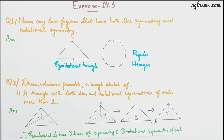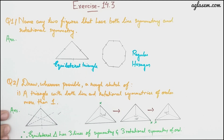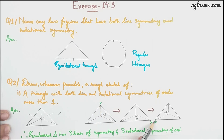The next question asks to draw a sketch of a triangle with both line and rotational symmetry of order more than one. Here we have drawn an equilateral triangle. If it is rotated 120 degrees, the third side will come up. You can see the x mark moves here, then here, then here — so this has rotational symmetry of order more than one.